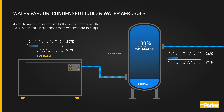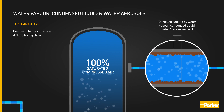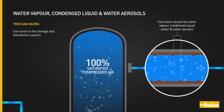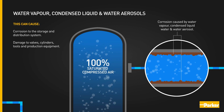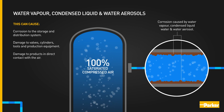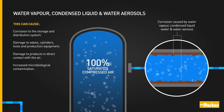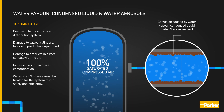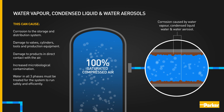As the temperature decreases further in the air receiver, the 100% saturated air condenses more water vapour into liquid. This can cause corrosion to the storage and distribution system, damage to valves, cylinders, tools and production equipment, damage to products in direct contact with the air, and increased microbiological contamination. Water in all three phases must be treated for the system to run safely and efficiently.